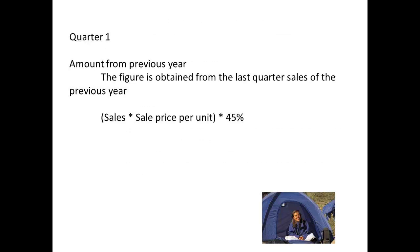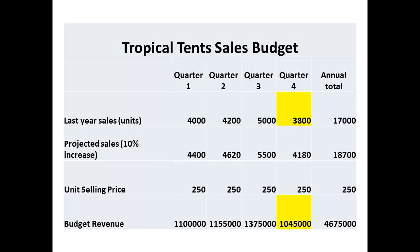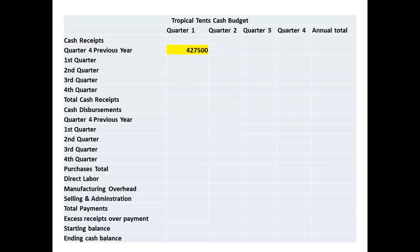In the first quarter, the first figure to be entered is the amount of revenue expected from the previous year. We determine this by looking at the number of sales made in the last quarter of the previous year. Multiplying those sales by the sale price per unit and taking 45% gives an estimate for revenue to be received. Last year, sales in quarter 4 were 3,800 units, producing a revenue of $1,045,000. We need 45% of this figure, which gives us $427,500, and we enter that to our cash budget.